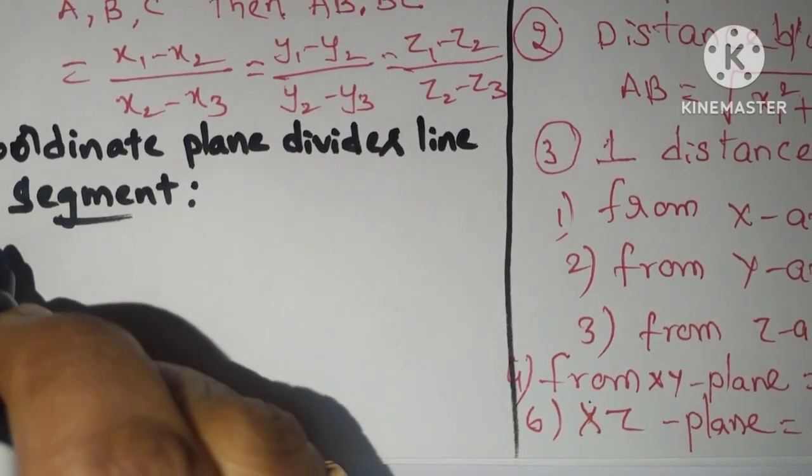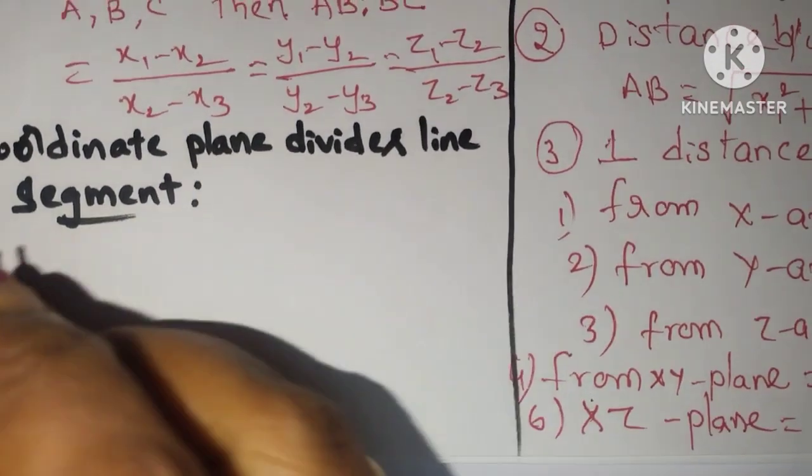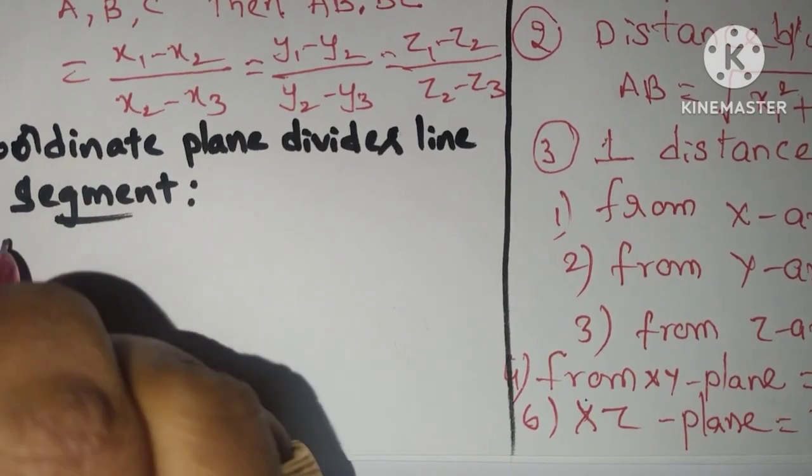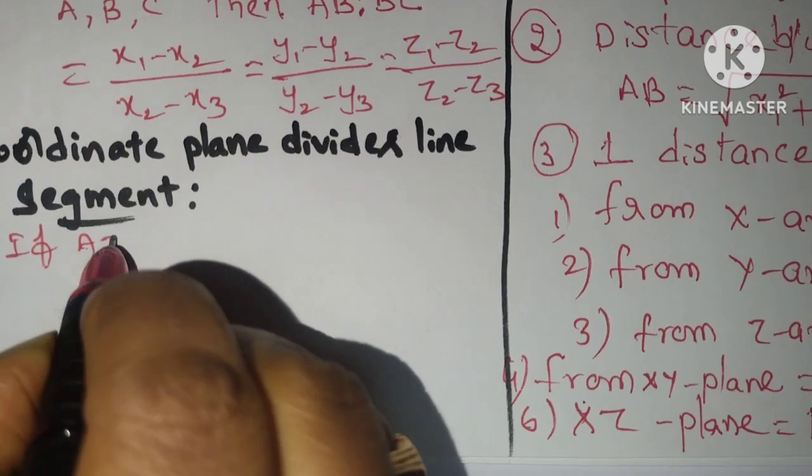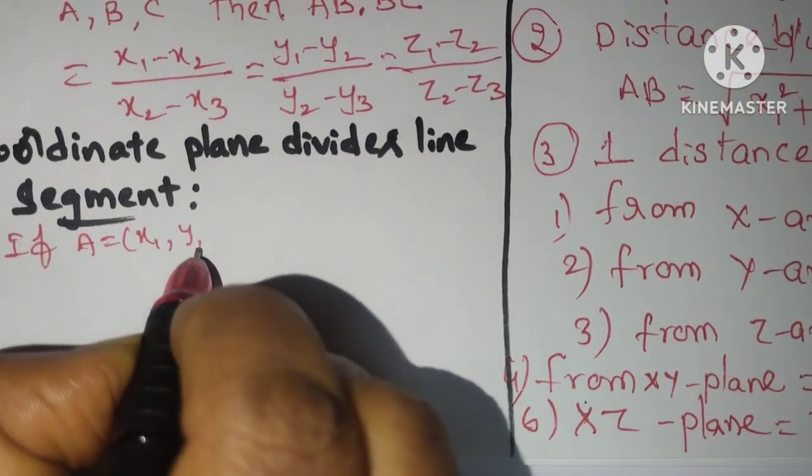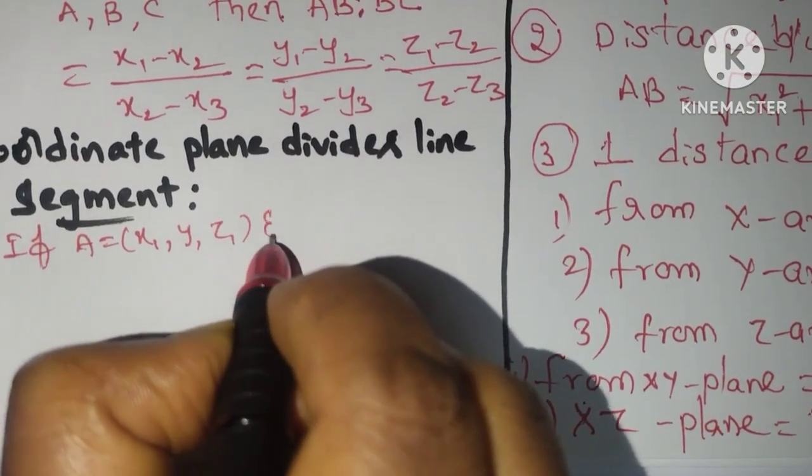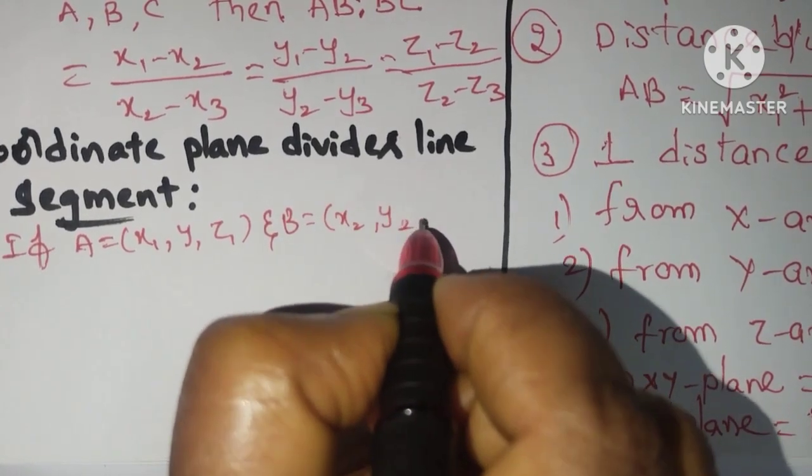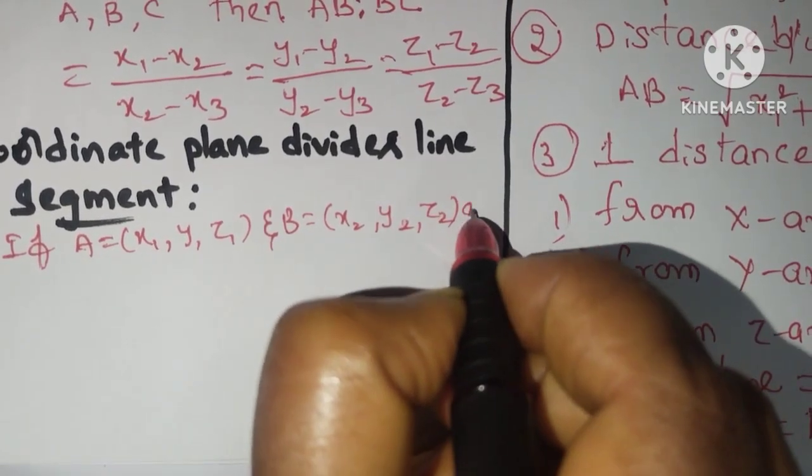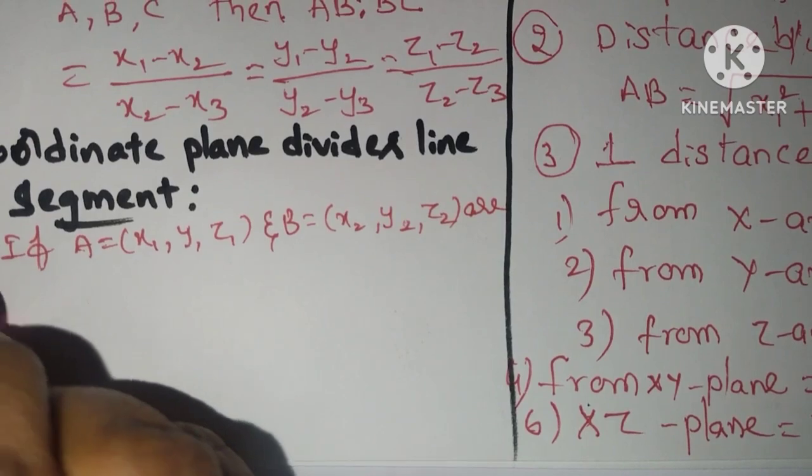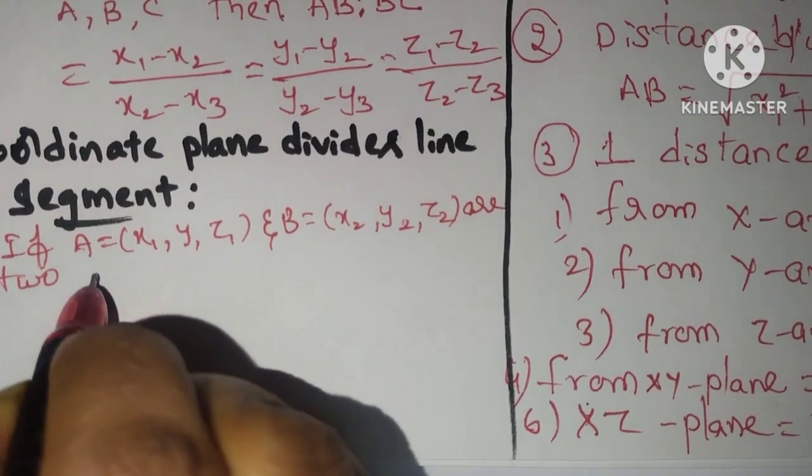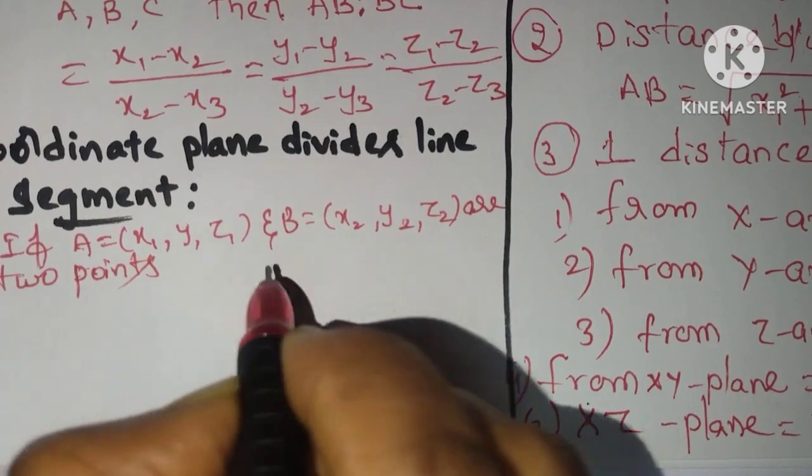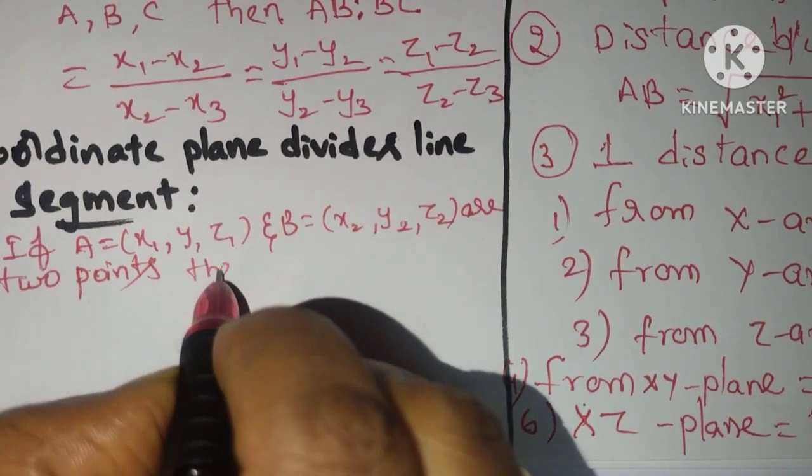For example, I am taking A point and B point. Suppose if A is X1, Y1, Z1 and B equals X2, Y2, Z2 are two points. At two points, then the conditions I will write.